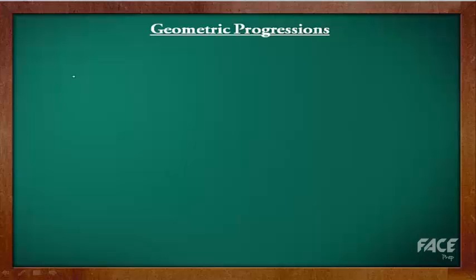If we examine the series A, AR, AR square, AR cube and so on, we notice that it is in geometric progression because on dividing any term with any term that immediately precedes it, we get a constant factor. In this case the constant factor is R.